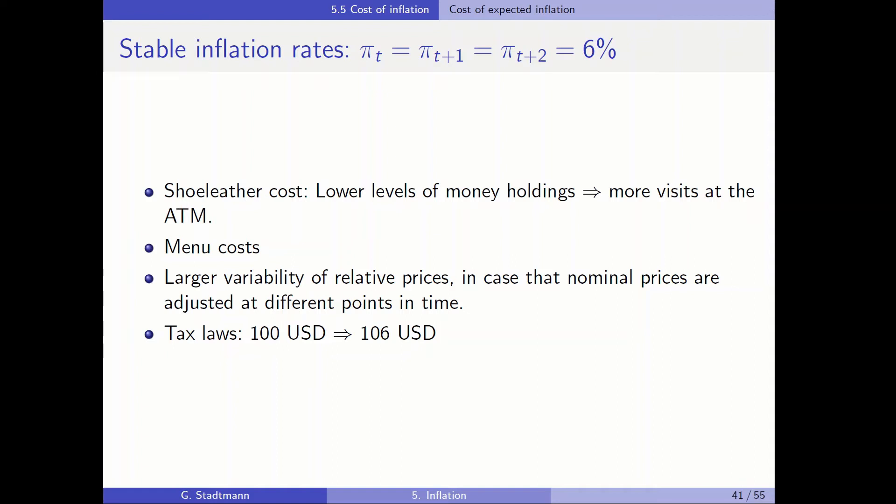In this kind of situation also the tax system can cause some problems. Let's assume that a stock increases from 100 US dollar to 106 US dollar, so that one agent who bought this stock makes a profit of 6 US dollar, then this gain in capital would be taxed, despite the fact that in real terms there is no gain at all.